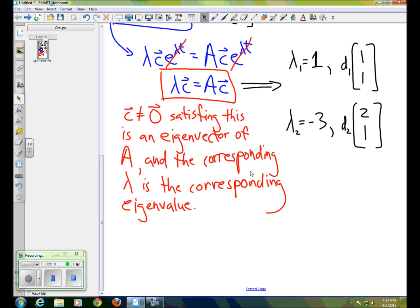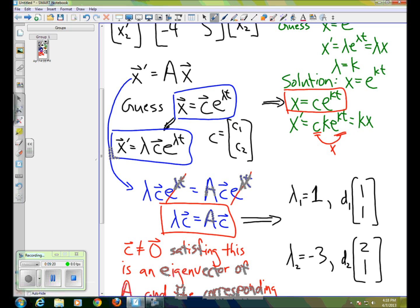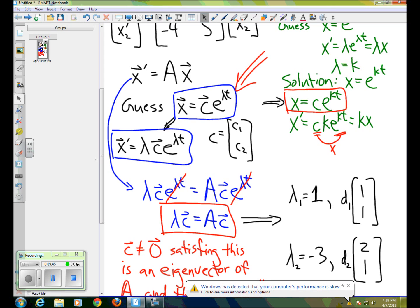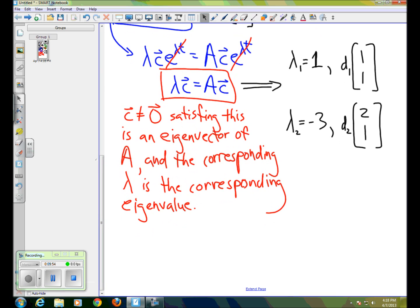So remember that this whole story started with this guess that x looks like some constant vector times e to the lambda t. And we have our two constant vectors: d1 times 1, 1 and d2 times 2, 1. And we have our two values of lambda. So we actually have two solutions. But just like when we worked with second order differential equations, our final solution is a linear combination of those.